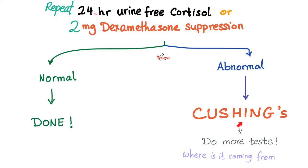Now, where is the Cushing coming from? Is it a problem in the pituitary secreting too much ACTH? Or is it a problem in the adrenal cortex secreting more cortisol? Or could it be an ectopic tumor or cancer secreting ACTH — like lung cancer, for example? To find out, you order more tests, such as measuring ACTH in the blood.